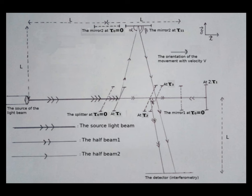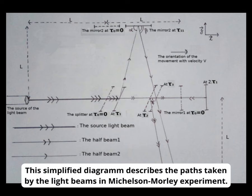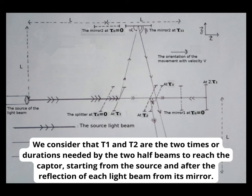This is a drawn simplified diagram of the apparatus of Michelson-Morley experiment. This simplified diagram describes the paths taken by the light beams in Michelson-Morley experiment. We consider that T1 and T2 are the two times or durations needed by the two half beams to reach the captor, starting from the source and after the reflection of each light beam from its mirror.